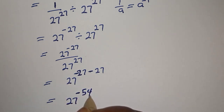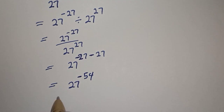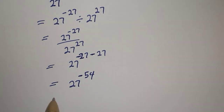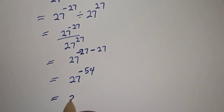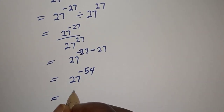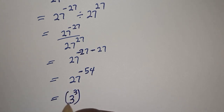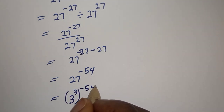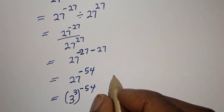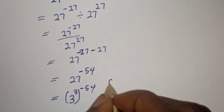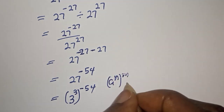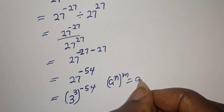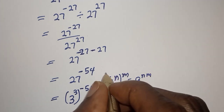We can still simplify this further. This is equal to 3 raised to power 3, to the power of minus 54. And if you have a raised to power n to the power of m, this is equal to a raised to power n times m.